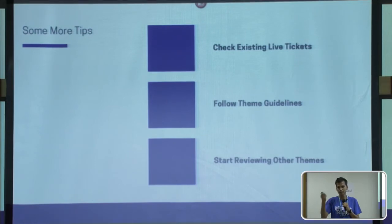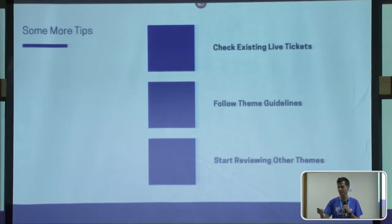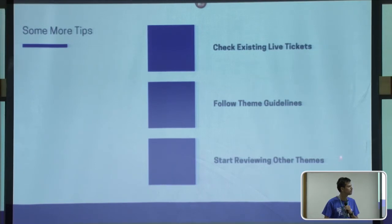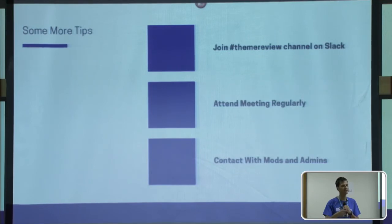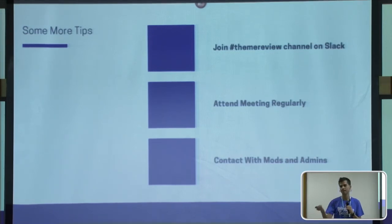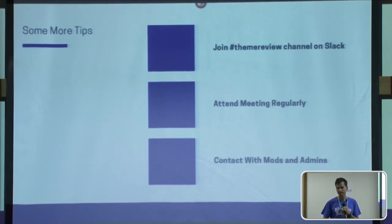If you are going to review or develop themes, here are very useful tips. Check existing live tickets so you can know what the required things are and how the review process works. Follow the theme guidelines handbook. Start reviewing other themes — this is the best method to learn how to develop themes. Join the theme review channel on Slack, attend meetings regularly, and contact mods and admins. You can ask any question related to theme review or theme issues — this is the best way to learn theme development and theme review.